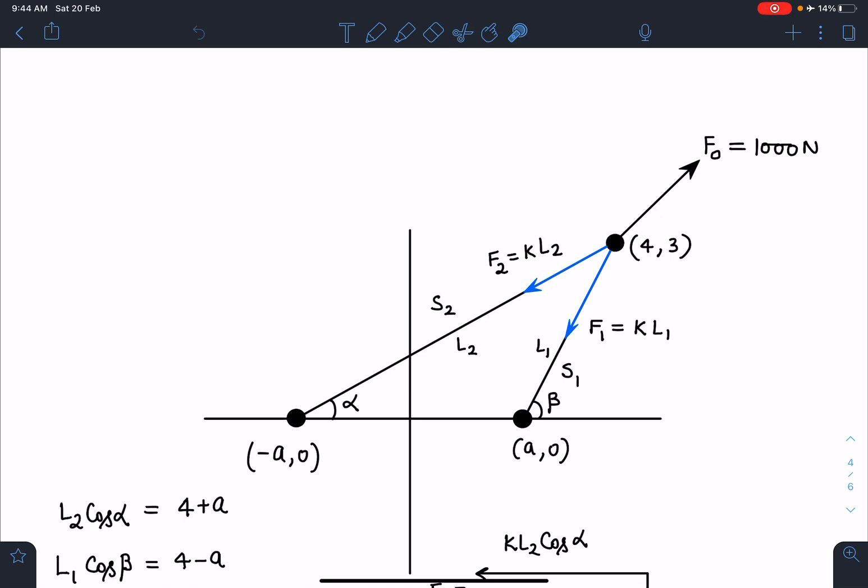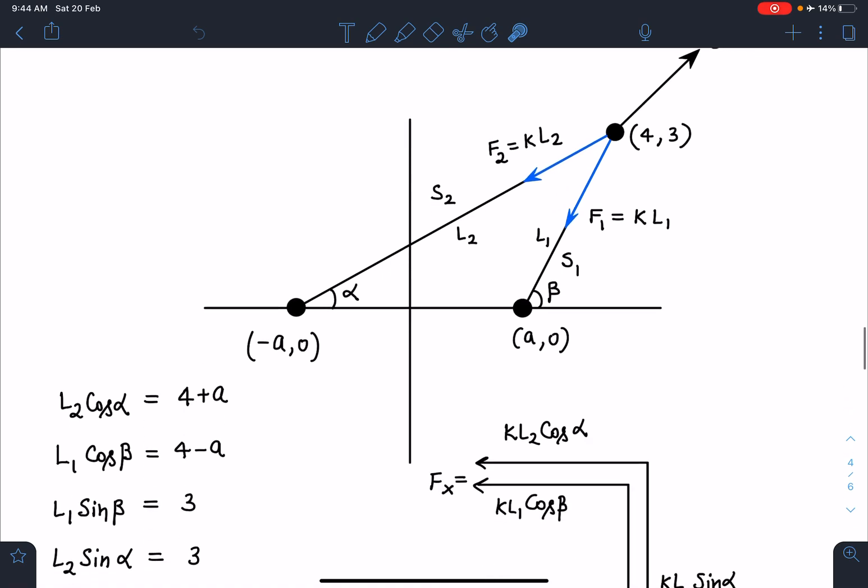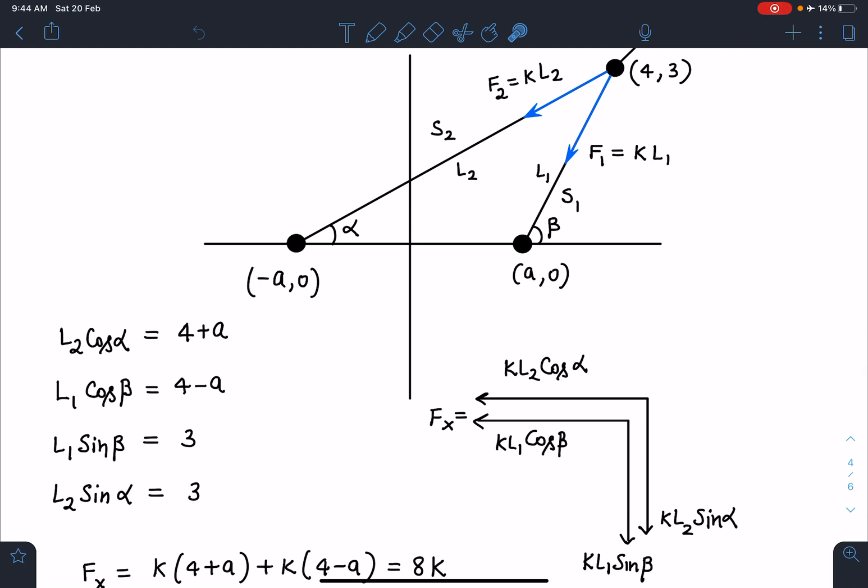The best part of this problem is when you resolve all these forces. In the horizontal direction it will be F2 cos α which is KL2 cos α. Similarly here this is F1 cos β or KL1 cos β. In vertical direction, both strings will give force in the outward direction.